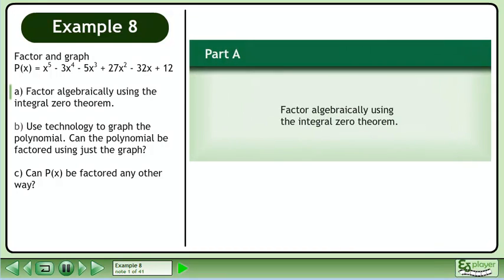Factor the polynomial p(x) = x⁵ - 3x⁴ - 5x³ + 27x² - 32x + 12.